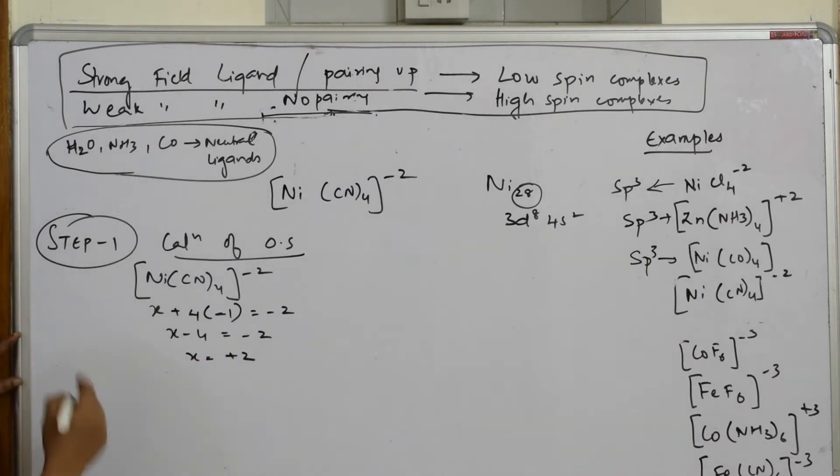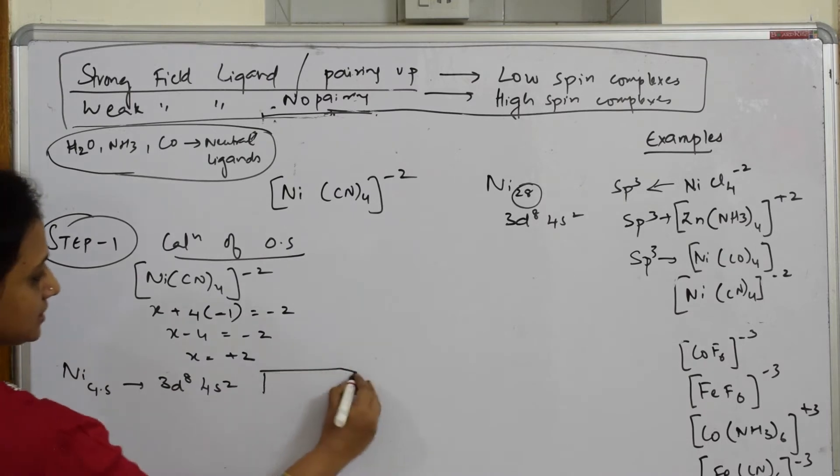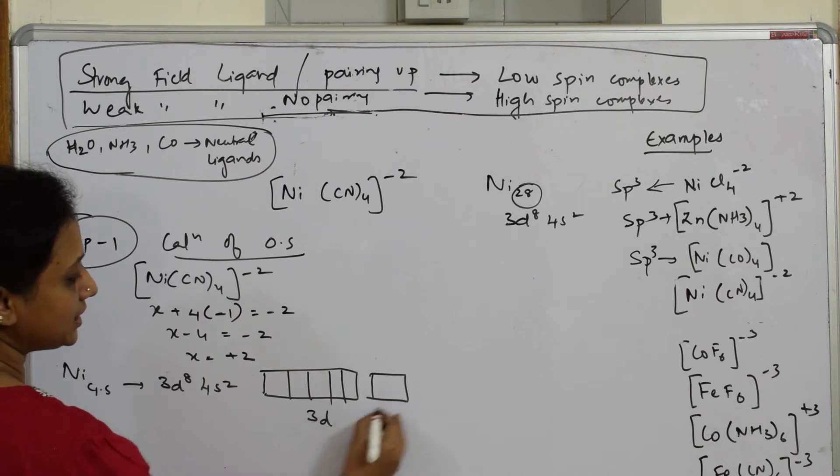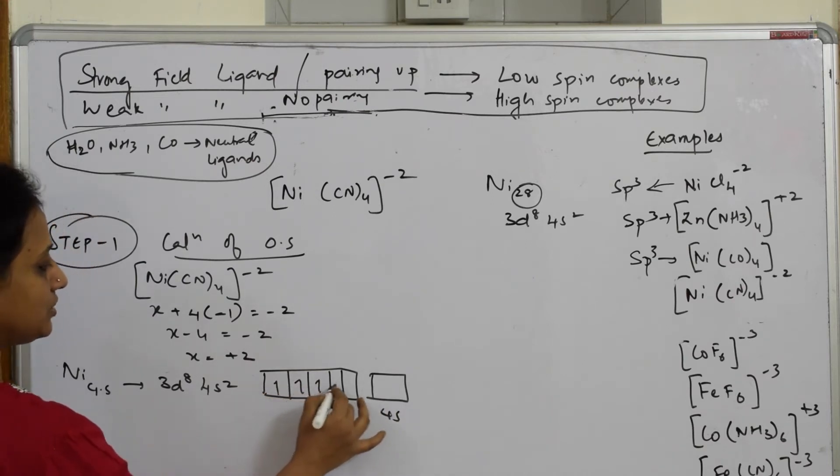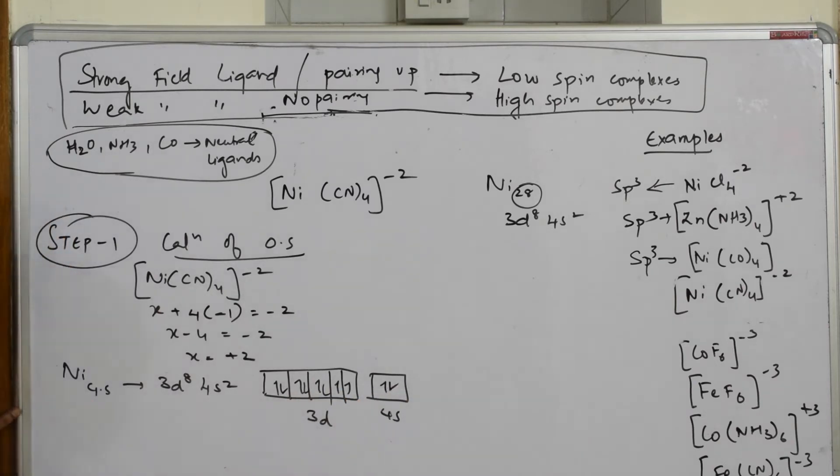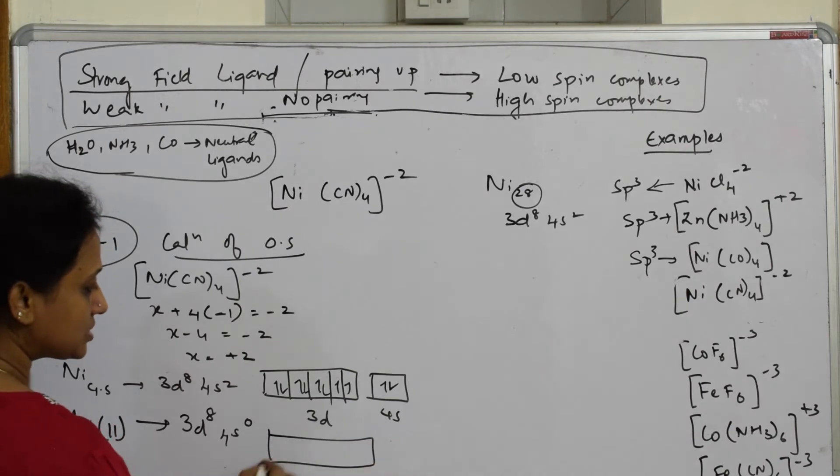Let's start. Nickel ground state configuration: 3d8 4s2. Write that 1, 2, 3, 4, 5 and this is 3d, this is 4s: 1, 2, 3, 4, 5, 6, 7, 8. Let us write nickel 2 plus because its oxidation state is plus 2. What will happen? It will lose electrons from here. This becomes 3d8 4s0.